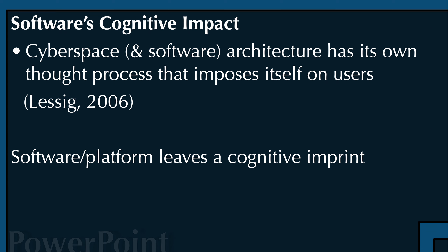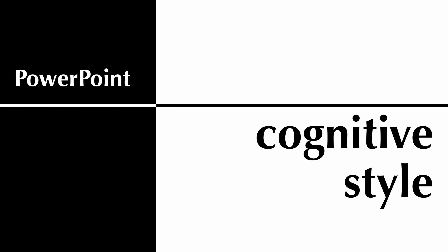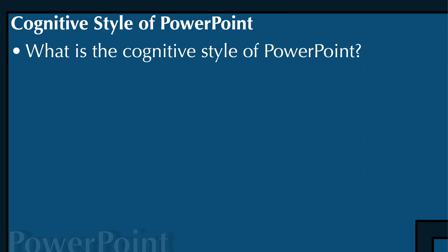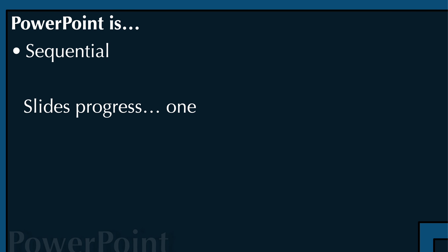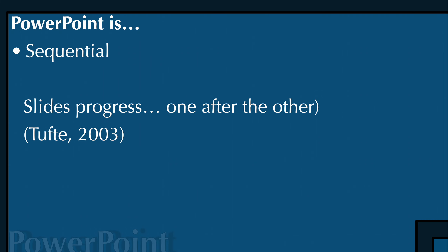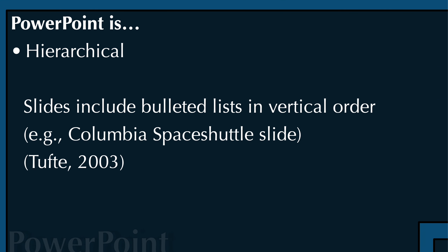Because of that, software leaves a cognitive imprint on people. More specifically, what is the cognitive style of PowerPoint? For example, PowerPoint is sequential. Everyone knows PowerPoint — it's one of Microsoft's key pieces of software. When you look at a slide deck, the slides progress one after the other; you go through them in order and there's no other way around it.